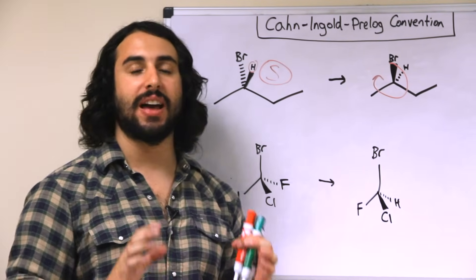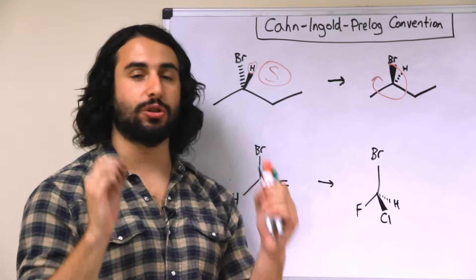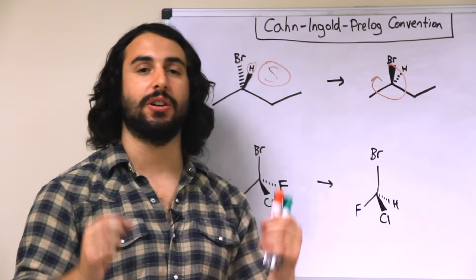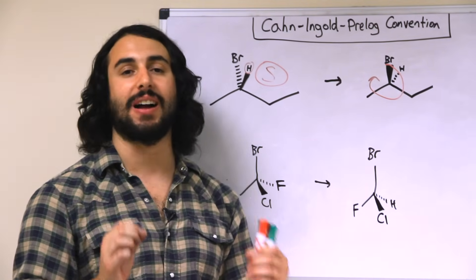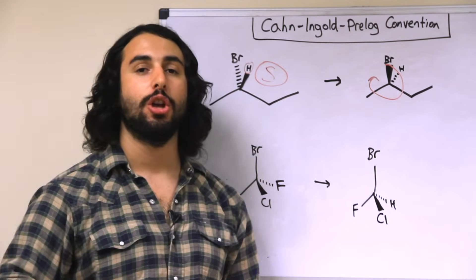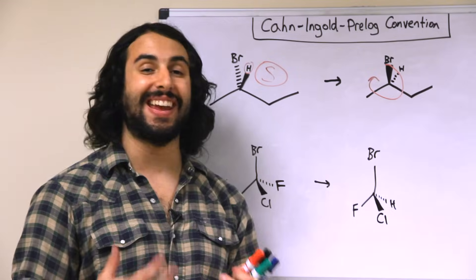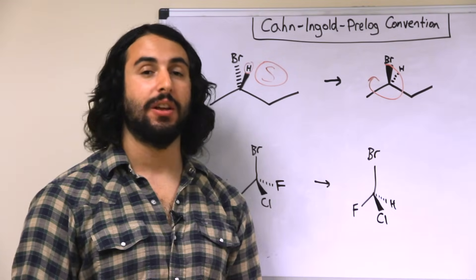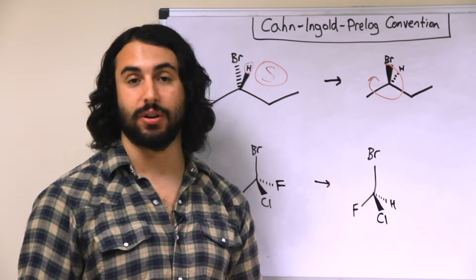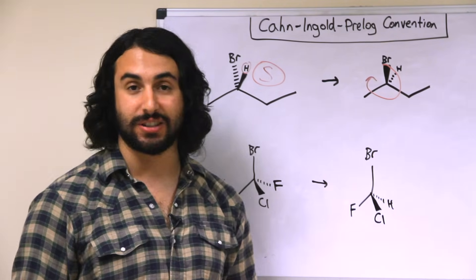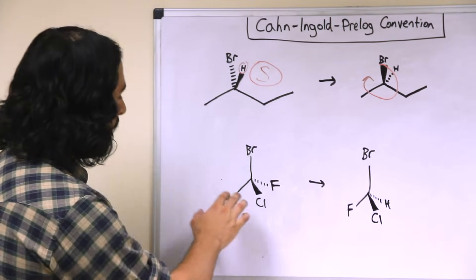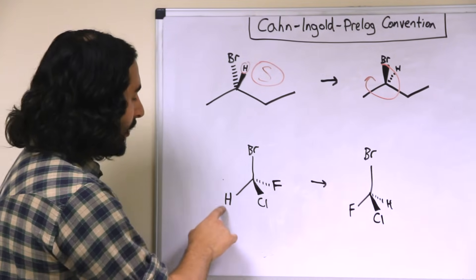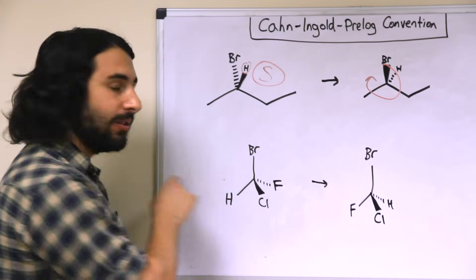We can swap things to make it easier for ourselves, but we must invert our answer, because it is the case that if you switch the position of any two groups on a chiral center, you will invert the stereochemistry of that chiral center.